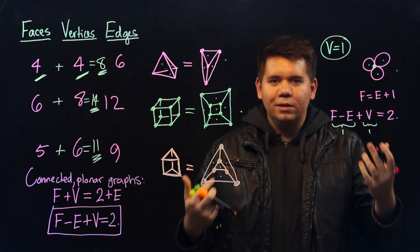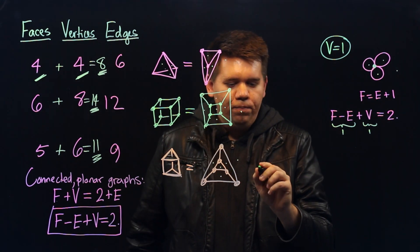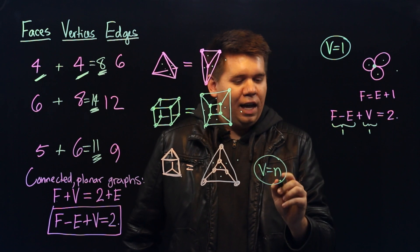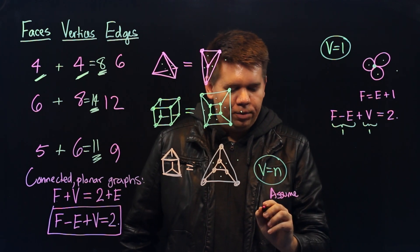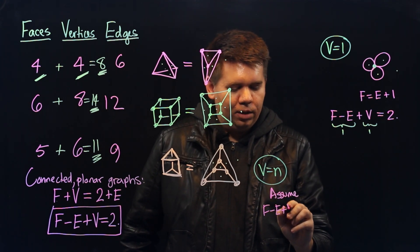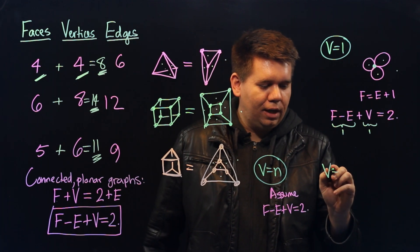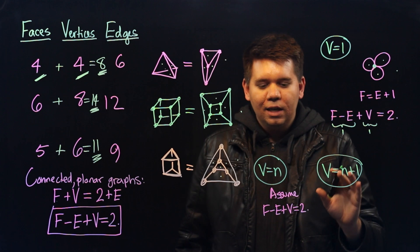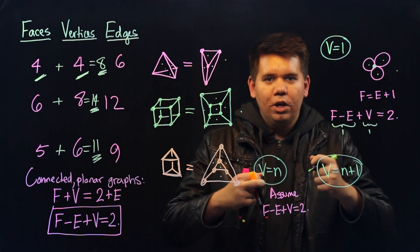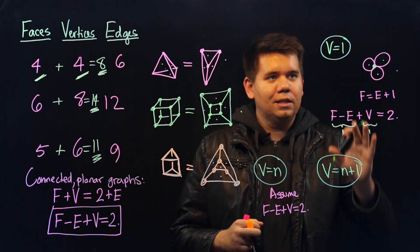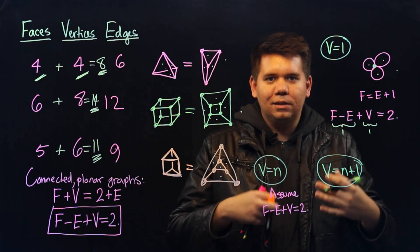But what if there are more vertices? What induction says is: assume this statement holds when there are n vertices — that the number of faces minus the number of edges plus the number of vertices equals 2. Then we have to argue that when we have one additional vertex, the statement still holds. This will show us that each time you add another vertex to your graph, you're still going to get the same relationship. Since it's true for one, then when you add another one, it'll be true for two, three, four, five, six, and so on.